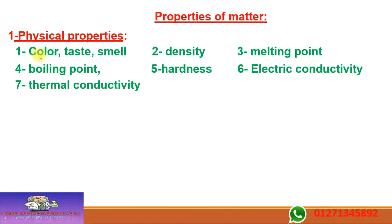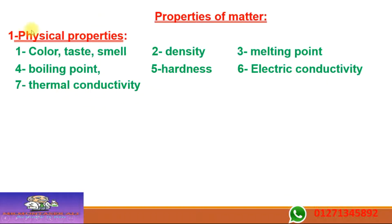Physical properties include: number one — color, taste, and smell. Also density, melting point — درجة الانسهار — boiling point — درجة الغليان — hardness — الصلابة — electric conductivity — توصيل الكهرباء — and thermal conductivity — توصيل الحرارة. All of these are physical properties.